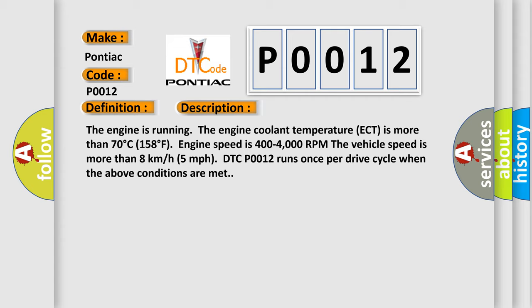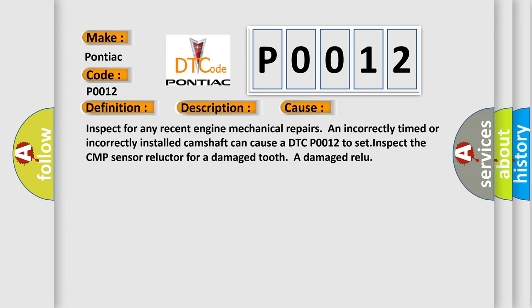This diagnostic error occurs most often in these cases: Inspect for any recent engine mechanical repairs. An incorrectly timed or incorrectly installed camshaft can cause a DTC P0012 to set. Inspect the CMP sensor reluctor for a damaged tooth or damaged reluctor.